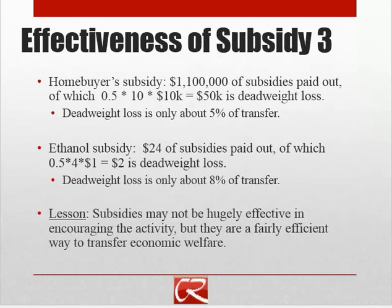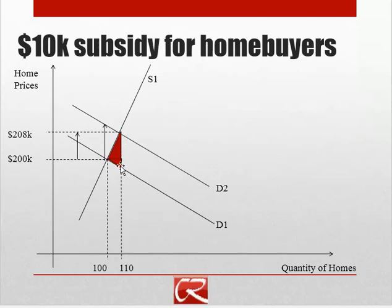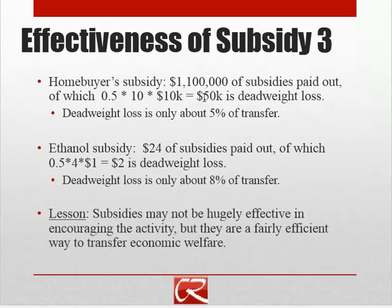A third way to look at these things is that maybe the point of the subsidy isn't to increase the amount of the transaction but simply to transfer economic welfare. In that case, we look at how much we paid out in subsidies relative to deadweight loss. Going back to the homeowner example, the deadweight loss triangle has a base of $10,000 and a height of 10 homes, so one-half base times height gives $50,000 of deadweight loss.